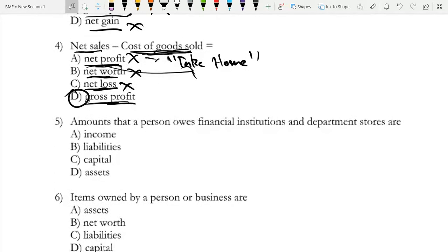Question five: amounts that a person owes financial institutions and department stores are? It's not income because that's money you're making. Liabilities - that's money which you owe, things you have to pay off. Capital is something you own, not something you owe. Assets are the opposite of liabilities - they increase your net worth. The answer is liabilities.